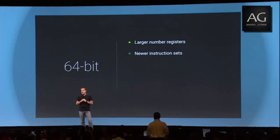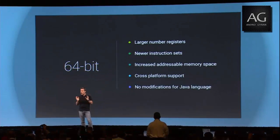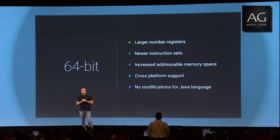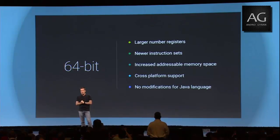ART doesn't just bring better performance — it's also more memory efficient. It's smart about when the app is put into the background, in which case we'll apply a slower but more intensive moving collector to save anything from hundreds of kilobytes to many megabytes. And finally, ART is fully 64-bit compatible. In fact, we've adapted and optimized the entire platform to take advantage of new 64-bit architectures. So now you can benefit from a larger number of registers, newer instruction sets, and increased memory addressable space.